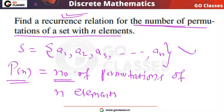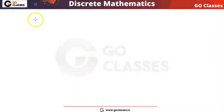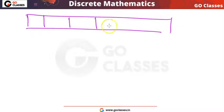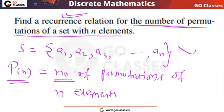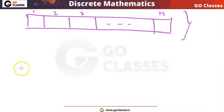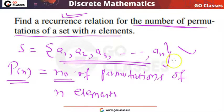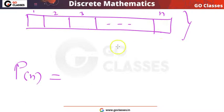Now we want to find the recurrence relation for this. When you are writing permutations of n elements, we have total n elements and total n positions. Permutations means arrangement — order matters. We want to find Pn: how many permutations are possible with these n elements.